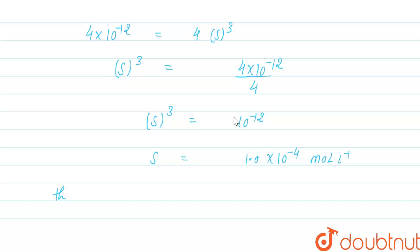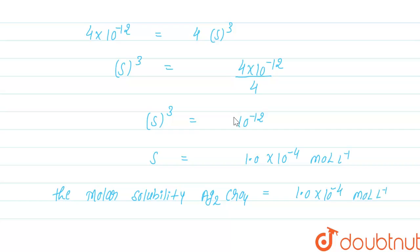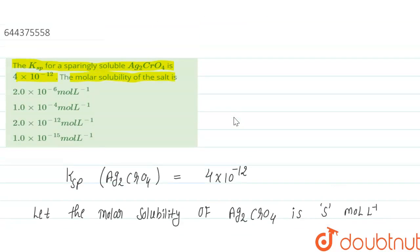So the molar solubility of sparingly soluble salt Ag₂CrO₄ is 1.0×10⁻⁴ mol L⁻¹. The correct option is option number 2: 1.0×10⁻⁴ mol L⁻¹. I hope this answered your question. Thank you.